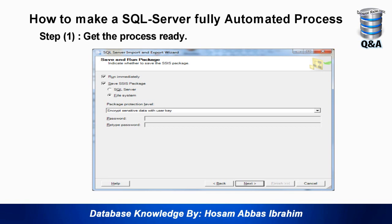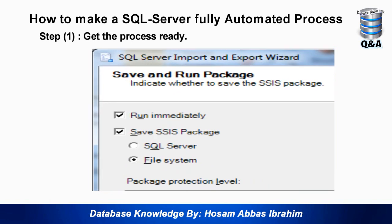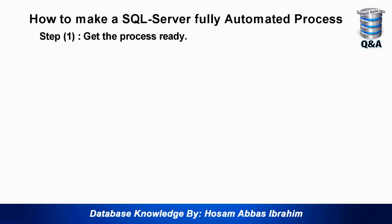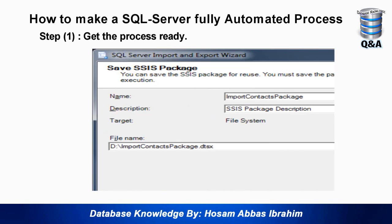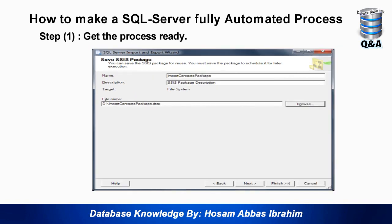Run the wizard exactly as we did last time. When it reaches the last step and says 'run immediately', check 'Save SSIS Package' and choose 'File System'. Press Next, choose where to save the package, give it a proper name, and always save it on the machine where the SQL Server instance is installed — not on another machine, because it might be down or inaccessible, which would cause the package to fail.